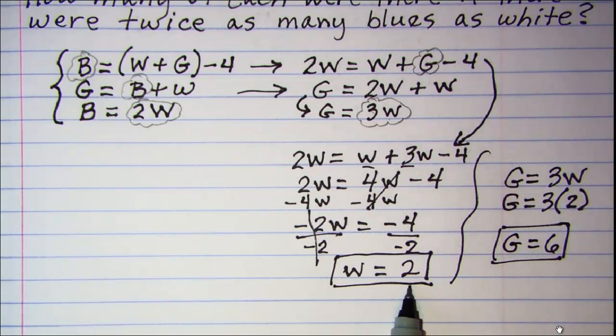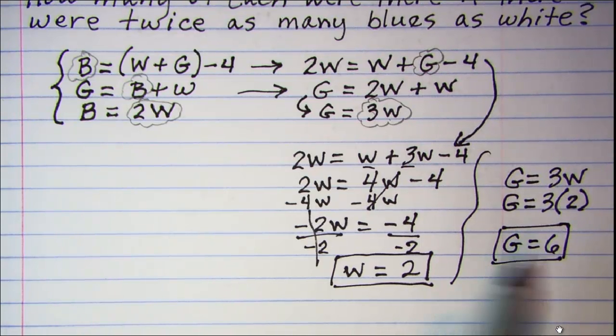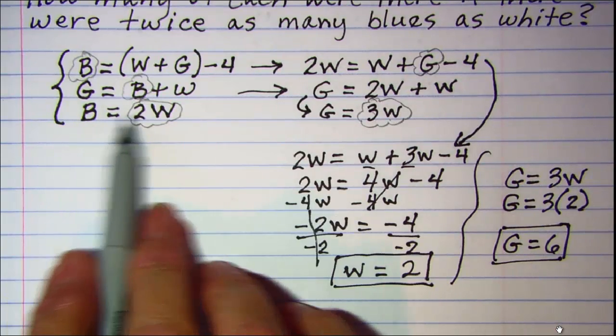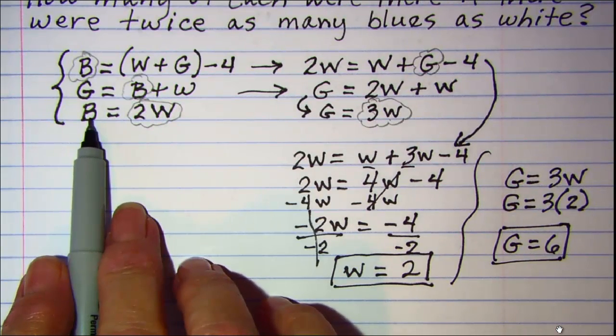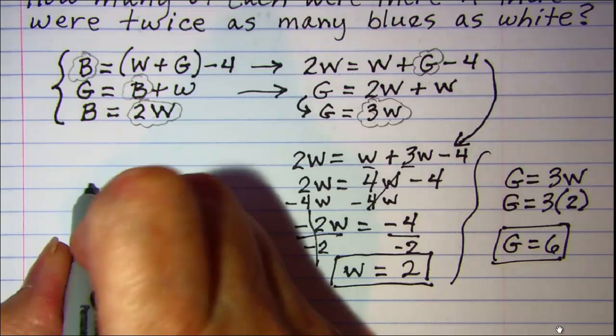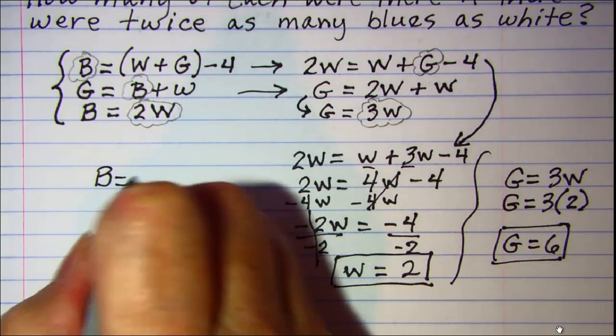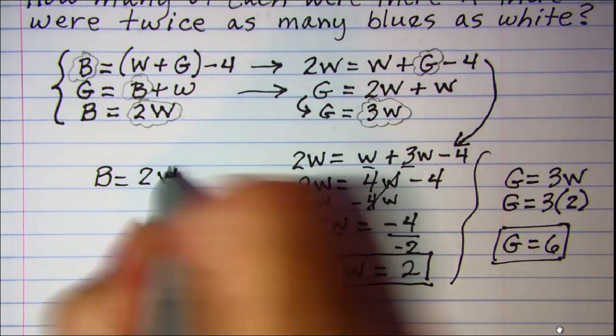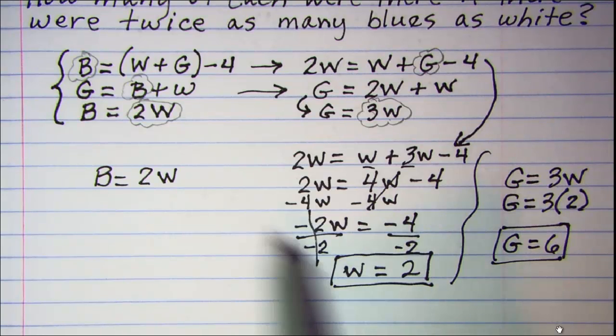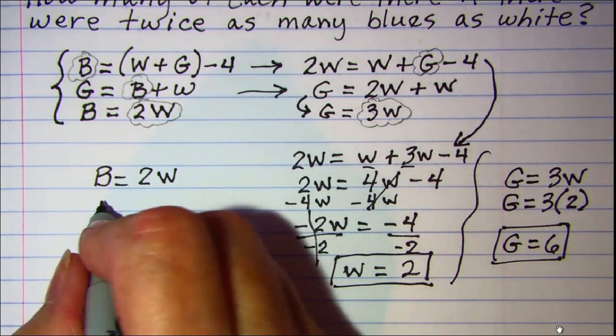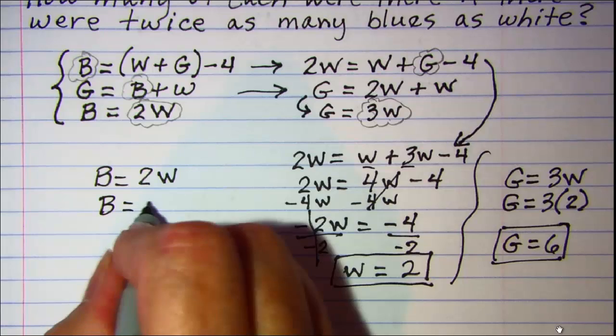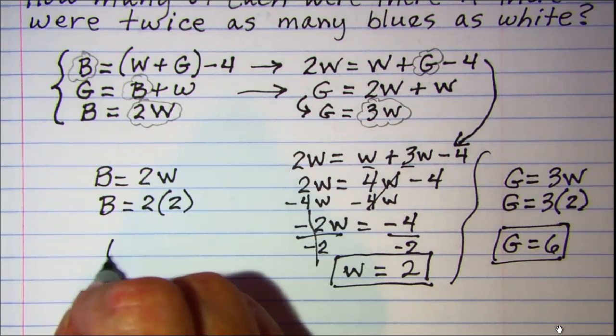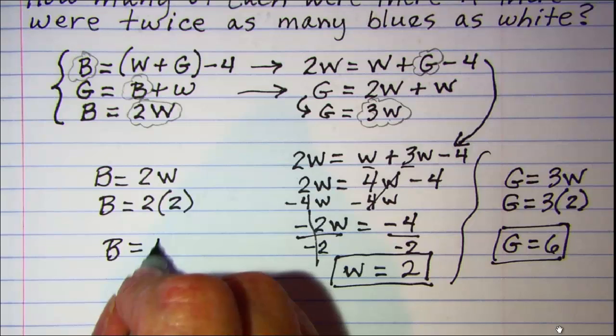Now I have a value for both W and G. And I can come back up here. This would be the easiest one to sub back into. I know that B is equal to 2W. And I can put 2 in for W. So B is equal to 2 times 2. So my value for B is 4.